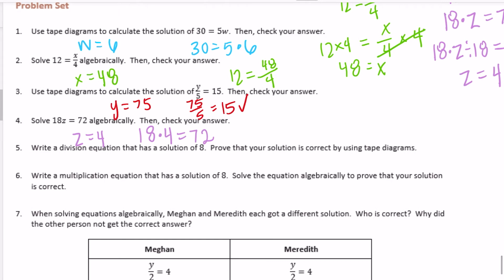Number 5, write a division equation that has a solution of 8. Prove that your solution is correct by using tape diagrams. So I'm just going to go ahead and write, let's see, 8 divided by 4 is equal to 2. So there's a division equation. And I'm just going to take out the 8 and make it k. So k over 4 is equal to 2. So now we know that k is going to be equal to 8 because we purposely made it that way. Because we want it to have a solution of 8.